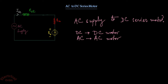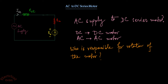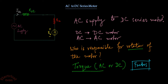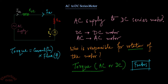Before going into that discussion, we first need to know who is responsible for the rotation of the motor. The answer is torque — whether it is an AC motor or a DC motor, torque is always responsible for rotation. In the case of a DC motor, the torque is equal to armature current Ia multiplied by flux Phi: τ = Φ × Ia.